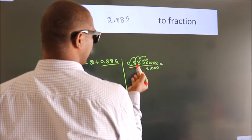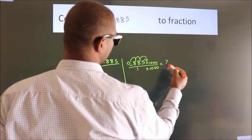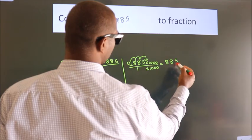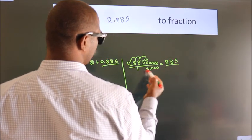0.885 into 1000 is 885. 1 into 1000 is 1000.